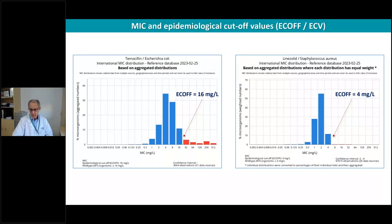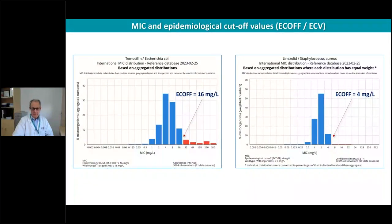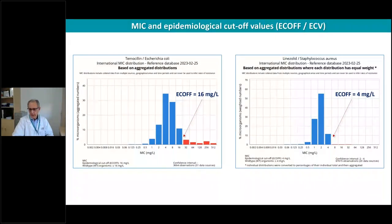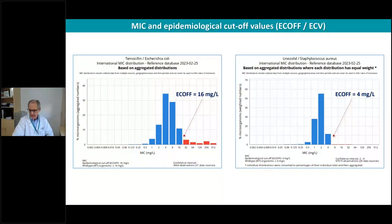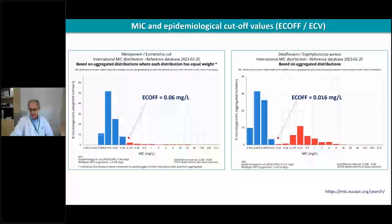Looking at examples on our webpage, one microgram per mL is a desirable value for the activity of new compounds — but this is not the case for all antibiotics. For temocillin against E. coli in urinary tract infection, because it concentrates in urine, the ECOFF is 8 mg/mL and the mode is 4 µg/mL. For linezolid against Staphylococcus aureus, the ECOFF is 4 µg/mL and the mode is 2 µg/mL — slightly higher than 1 µg/mL. On the other hand, for meropenem against E. coli the ECOFF is 0.06 mg/mL, and for delafloxacin — a new fluoroquinolone approved against Staphylococcus — the ECOFF is 0.016 µg/mL, well below that of ciprofloxacin or levofloxacin.